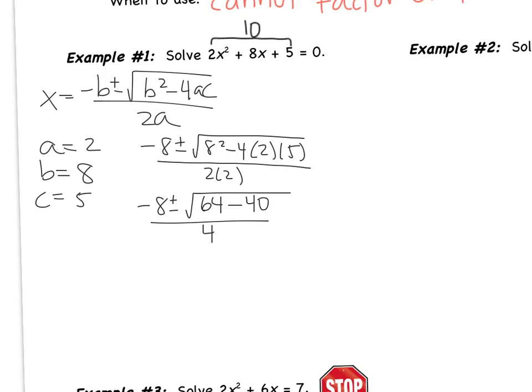Order of operations — I can't just start simplifying however I want. Remember, the order of operations is PEMDAS. We have to start with whatever's in parentheses. There are understood parentheses underneath the square root, which is why I start there. So 64 minus 40 is 24. I have negative 8 plus or minus the square root of 24, all over 4.